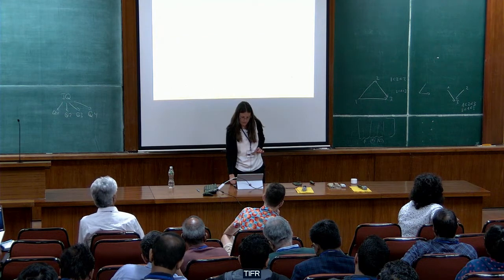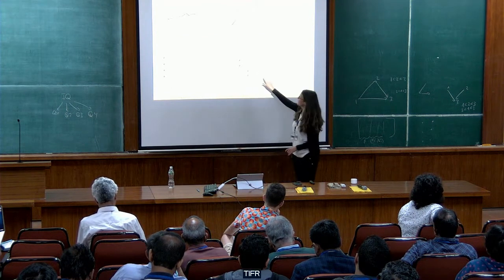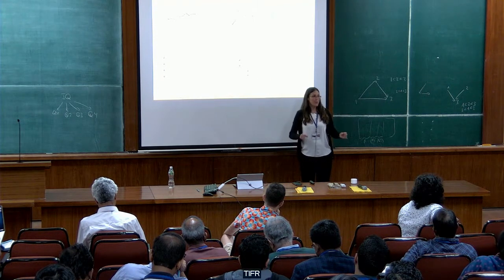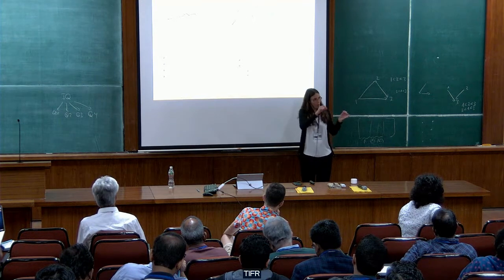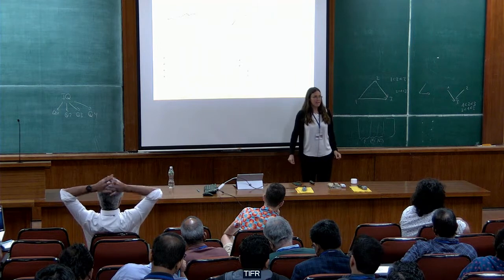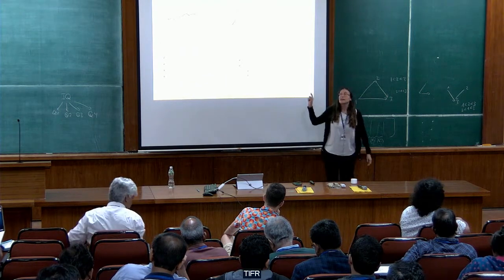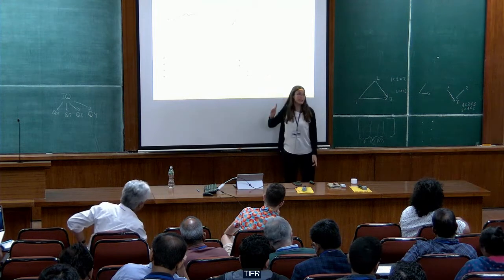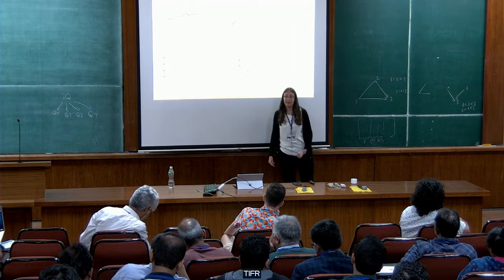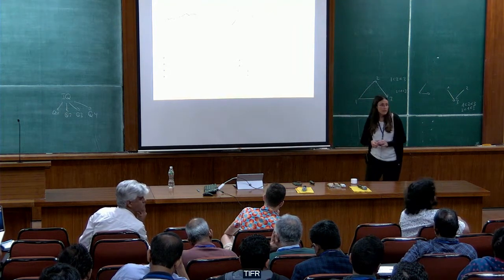What I mean by signed MTP2 in the discrete setting is exactly this: it's up to relabeling. There will be one way of ordering the categorical variables so that the distribution is MTP2. That's exactly what signed MTP2 means — there exists a way of labeling. So in a discrete latent tree model, it is going to be signed MTP2, meaning there exists a relabeling so that it becomes MTP2.